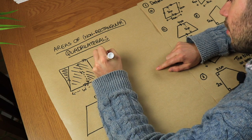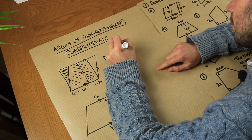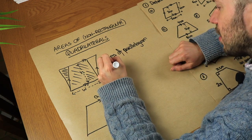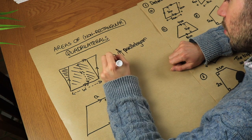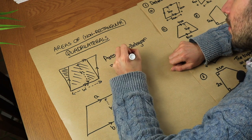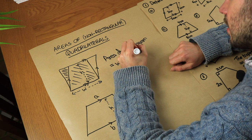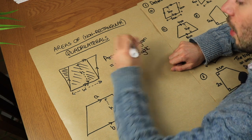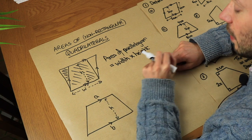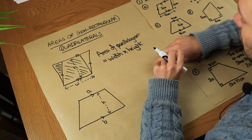So the area of a parallelogram — note the spelling of parallelogram — is just equal to the width times the perpendicular height. By that I mean the height has to be at right angles to that width. We'll do some examples of this in a second.